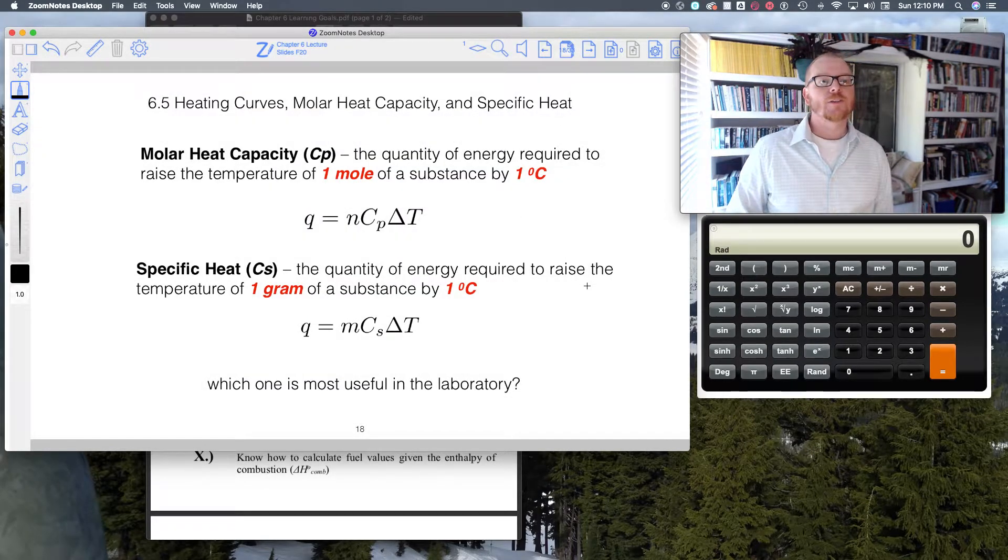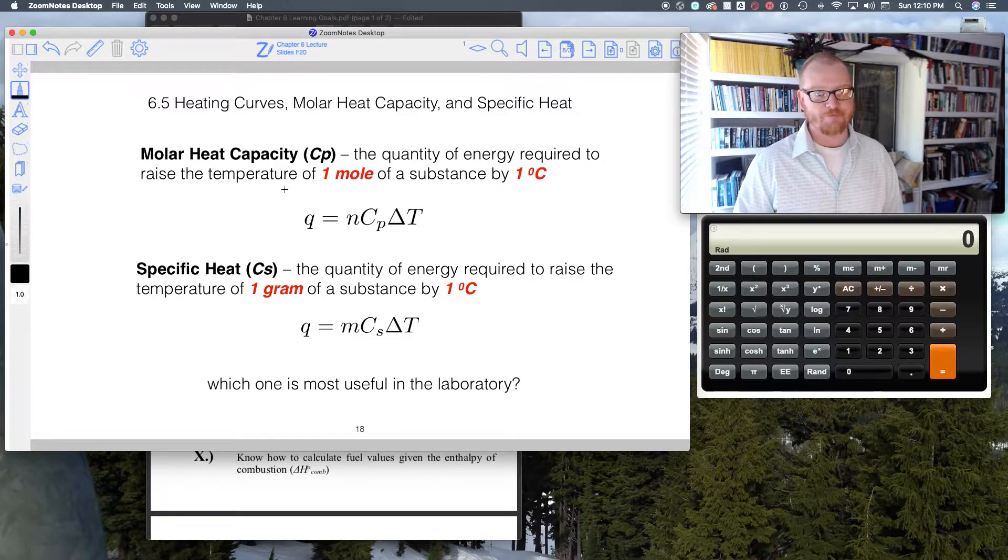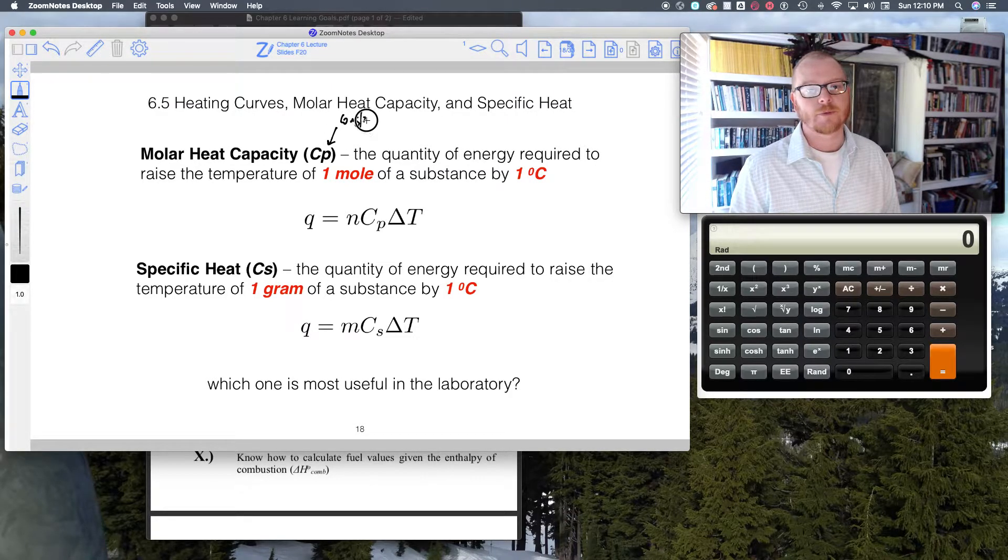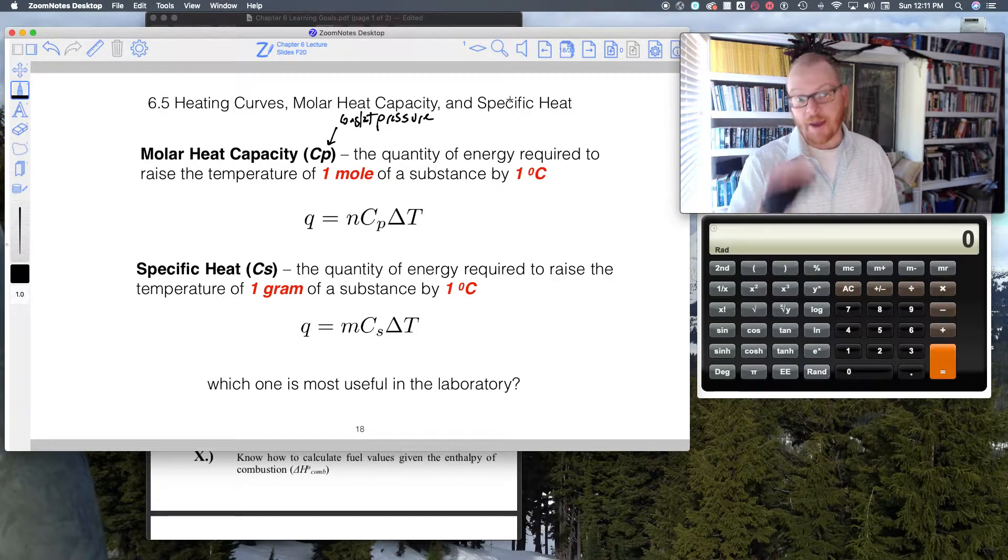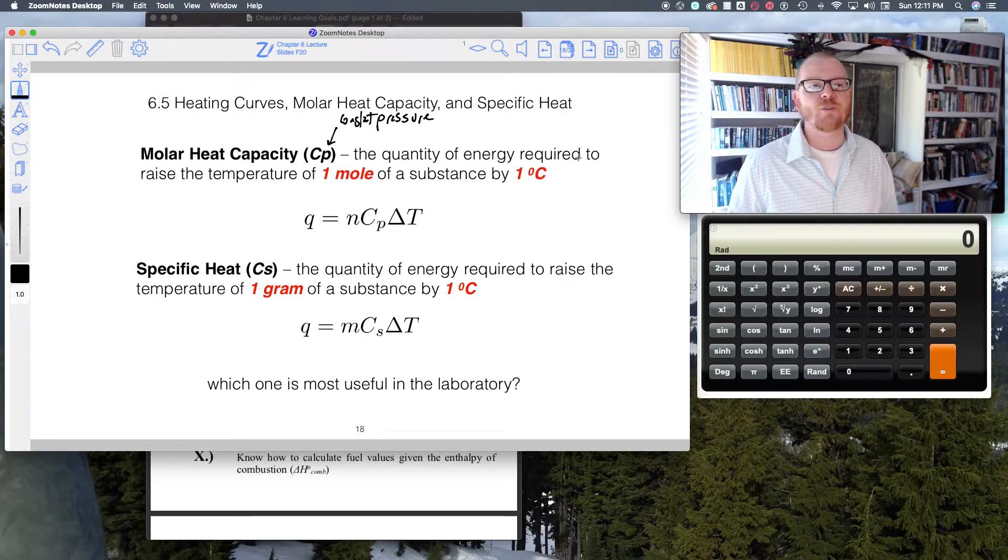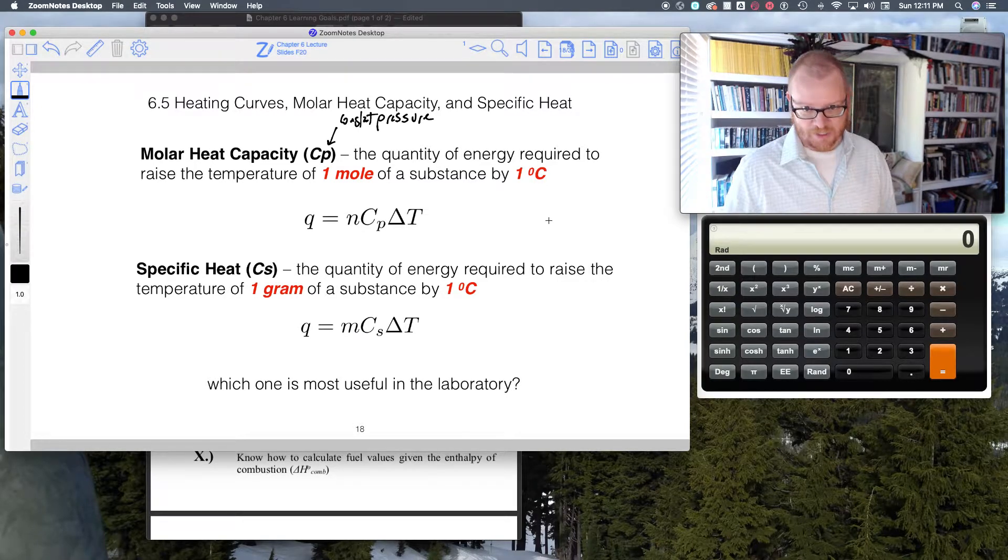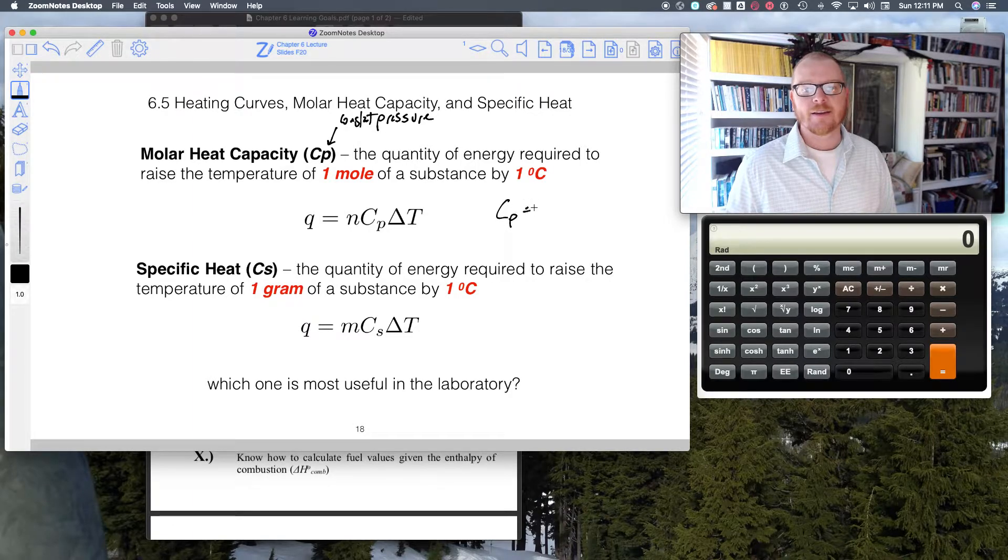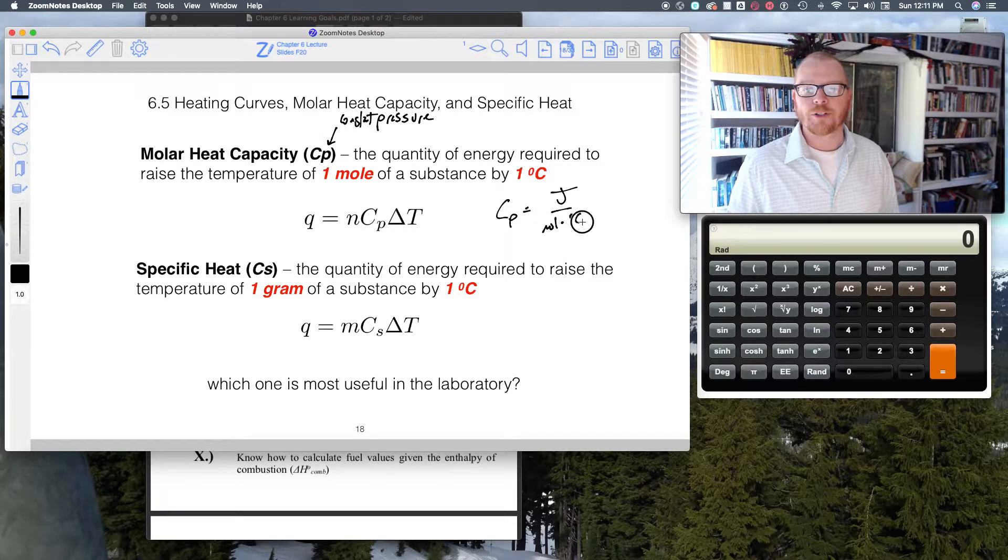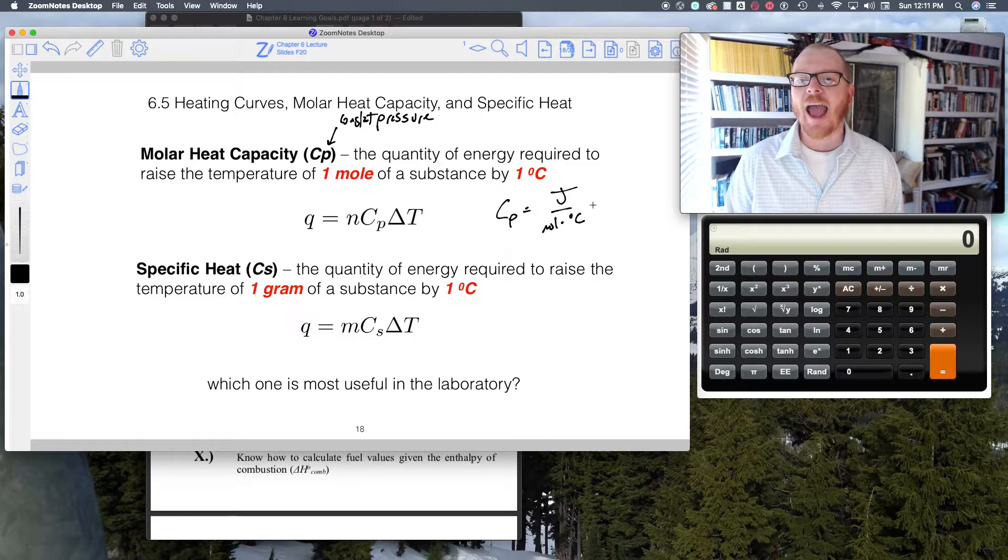We have two types of flavors of heat capacity: there's the molar heat capacity and there's the specific heat. The molar heat capacity, Cp, where the p denotes constant pressure—again, this is our useful laboratory bench quantity where we're just sitting on the lab bench at constant pressure. That's the quantity of energy required to raise the temperature of one mole of substance by one degree Celsius. Cp has units of joules per mole per degree C.